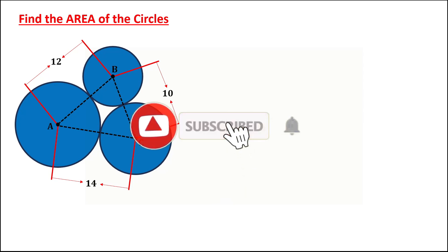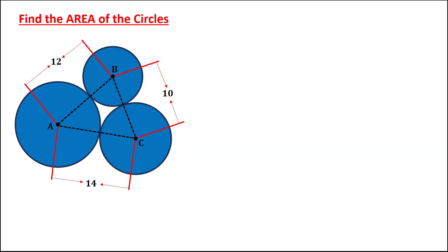So let's have this problem — to find the area of the circles from this given. The distance from the center of circle A to the center of circle B is 12, from the center of circle B to the center of circle C is 10, and from the center of circle A to the center of circle C is 14. So to find the area for the circles,